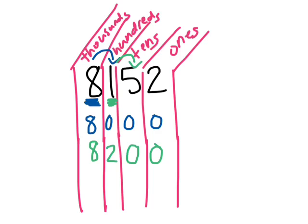What about to the nearest ten? Look next door. So we keep the eight, the one. And we have to figure out if we have to change the five or if it stays the same. Well, if we look next door, this is two. So it stays the same.